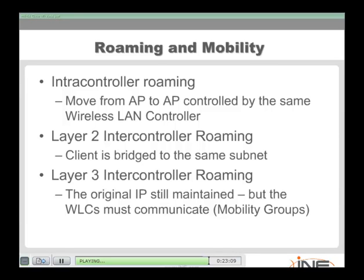Layer two inter-controller roaming is a bit tougher: the individual moves from AP to AP and from one wireless LAN controller to another, but stays within the same subnet. Layer three inter-controller roaming is the most complex: the individual moves from AP to AP, from one WLC to another, and also changes subnets. This is very difficult to implement.